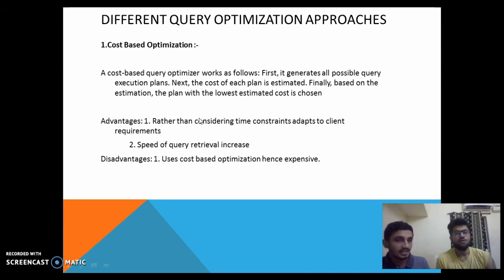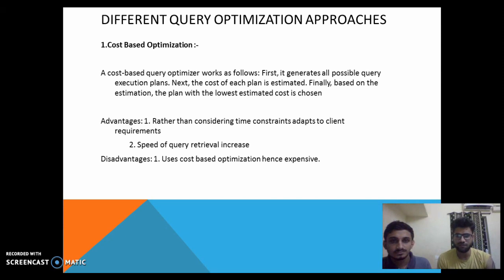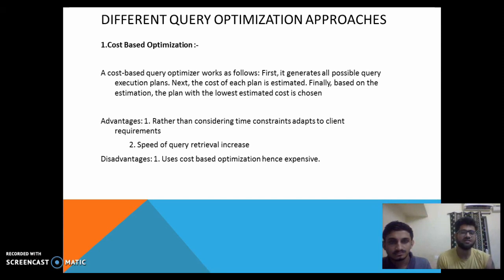Now, the next group member is going to explain about cost-based optimization. Basically, cost-based optimization works as follows: first, it generates all possible query execution plans; next, the cost of each plan is estimated; finally, based on the estimation, the plan with the lowest estimated cost is chosen. The advantage of using a cost-based optimization system is that rather than considering time constraints, it adapts to client requirements, and the speed of query retrieval increases.